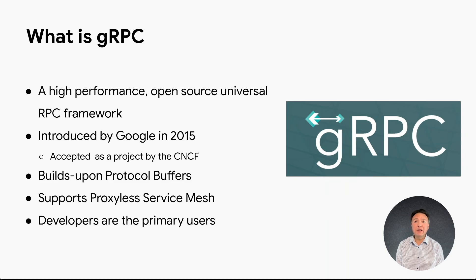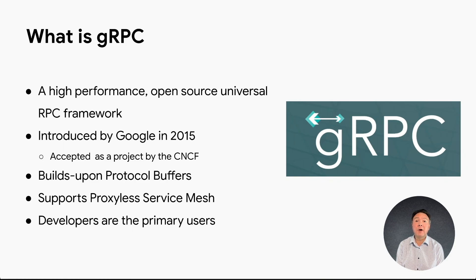One of the technologies that gRPC has a strong reliance on is protocol buffers. A protocol buffer is an open-sourced, language-neutral, highly efficient, extensible mechanism for serializing structured data. It acts as the interface definition language, or IDL, for gRPC. Protocol buffers are used to define the data structures which are leveraged to communicate via gRPC calls. Another technology often deployed with gRPC is a service mesh. While using a service mesh is not mandatory, organizations often combine service mesh capabilities such as load balancing, encryption, and service discovery to improve the security, availability, and scalability of their applications.